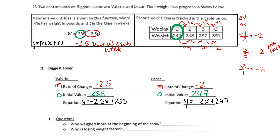To answer the comparison questions: Question one — who weighed more at the beginning of the show? That's the starting point, the initial value. Valerie weighed 235; Oscar weighed 247, so Oscar weighed more. Question two — who is losing weight faster? That's the rate of change. Valerie is losing 2.5 pounds per week; Oscar is only losing 2 pounds per week, so Valerie is losing more.